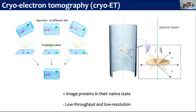This is obviously a lot more complicated than just doing single particle. But there is obviously a good reason why we want to do this. One of the main things you can do with cryo-ET is you can actually look at proteins in their native state. You don't need to purify your sample, but you can actually look at things in the cell or in their native environment. That's why we do the extra work of making these more complicated data collections - we can actually look at proteins in the native state.